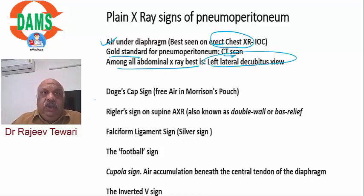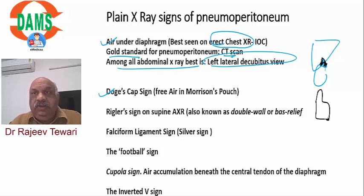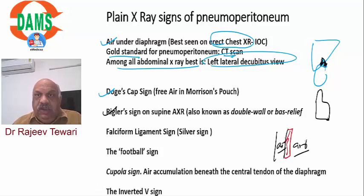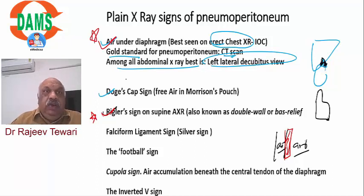Other signs of pneumoperitoneum: the Doge cap sign is air collected in Morrison's pouch (between the liver and kidney), giving the appearance of a doge cap. Rigler's sign is where you can see the bowel wall because there is air inside the bowel and air outside - so the wall is visible in between. These two signs are the most important and may be asked as images to identify.